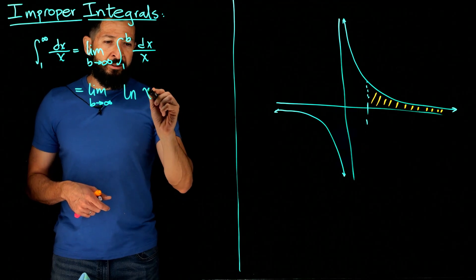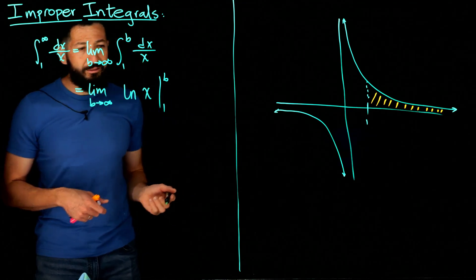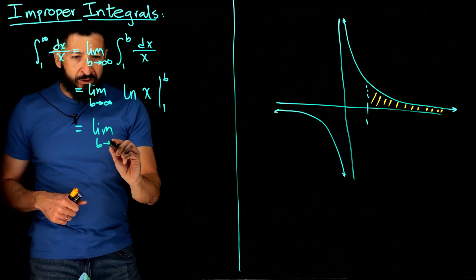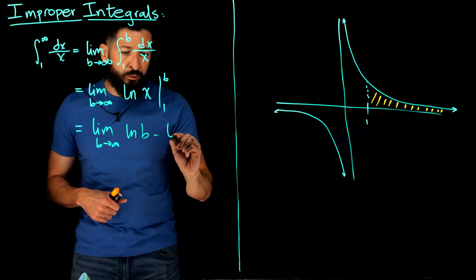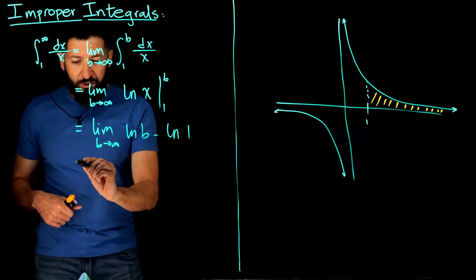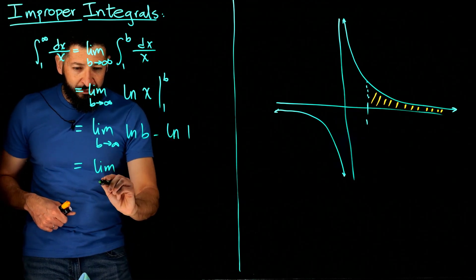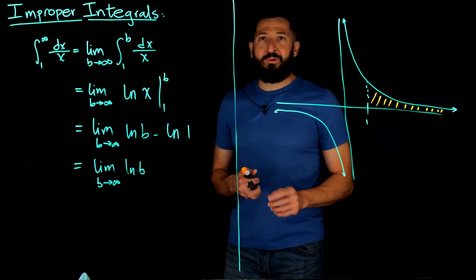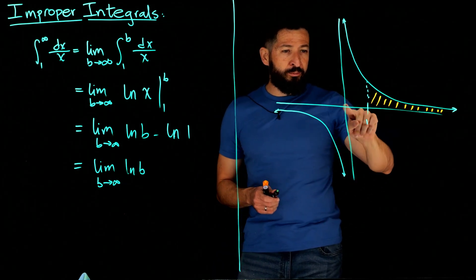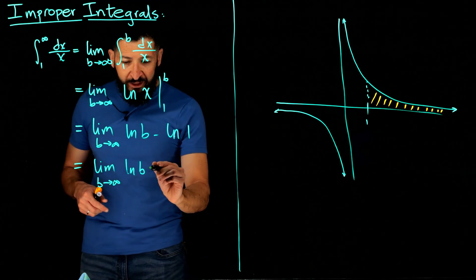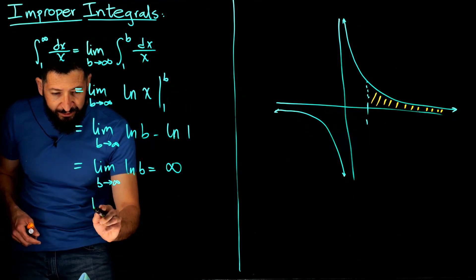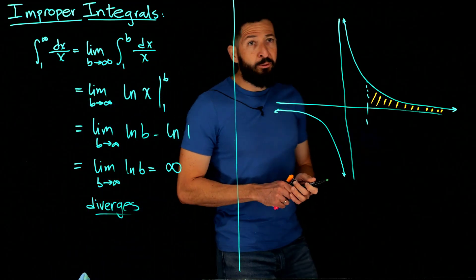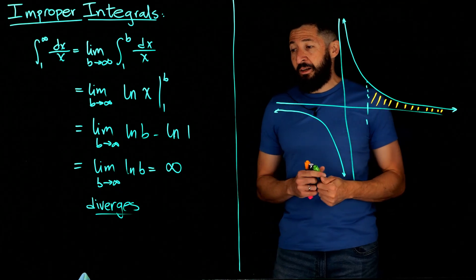We evaluate and get natural log of B minus natural log of 1. Natural log of 1 is zero, so that gives us the limit as B goes to infinity of the natural log of B. The natural log goes out to infinity, so the limit is not finite. Therefore, we say that this integral diverges.